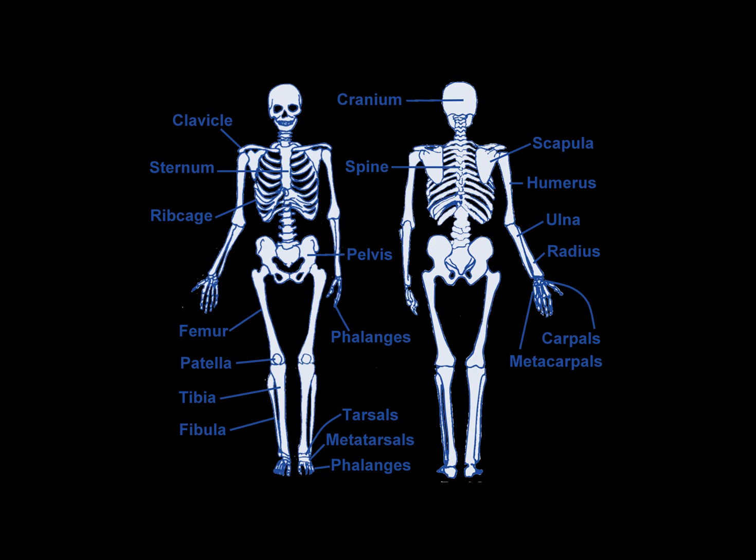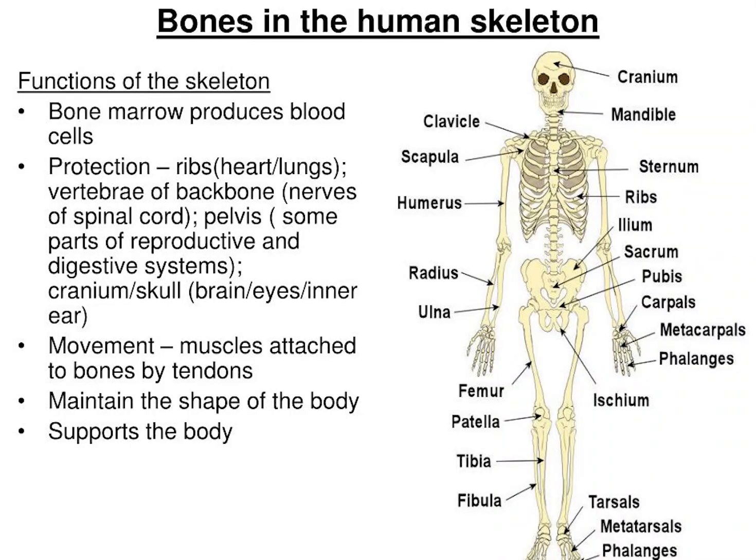Other types of tissue found in bones include marrow, endosteum and periosteum, nerves, blood vessels, and cartilage.